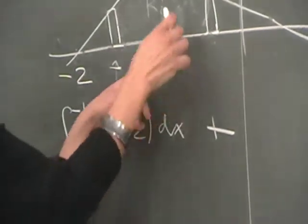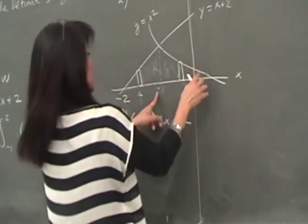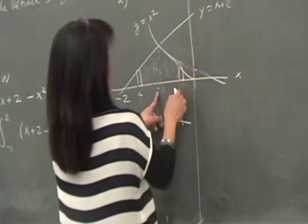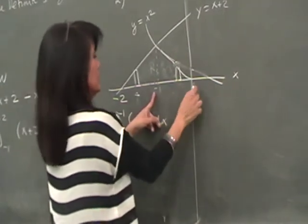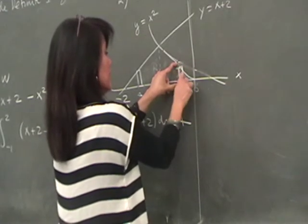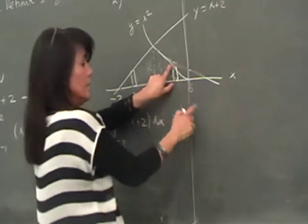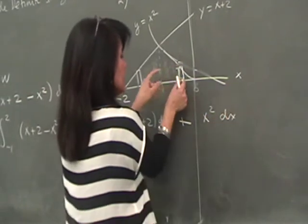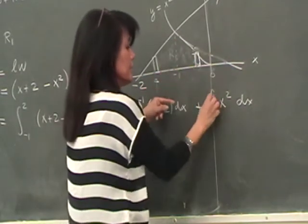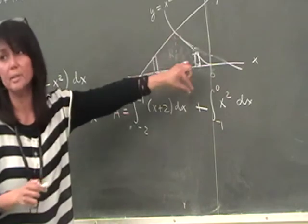After crossing at x equals negative 1, the boundary changes to the parabola y equals x squared. The length of this rectangle is x squared (since y below is 0), and the width is dx. This second integral runs from negative 1 to 0. That completes the area of region 2 using vertical elements of area.